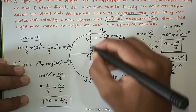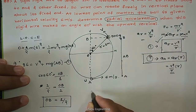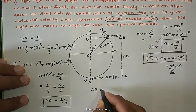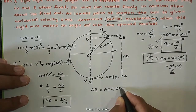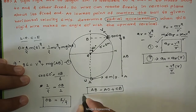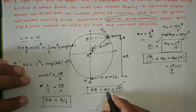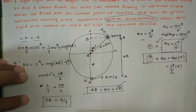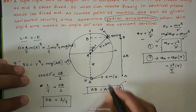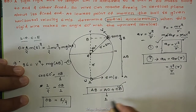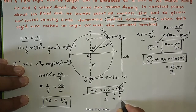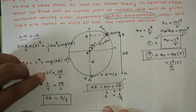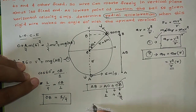We have found the distance OB equals half, and the total height AB equals three by two meters. Now we substitute this value back into the energy equation. We already have 36 equals v squared plus 2g times AB.